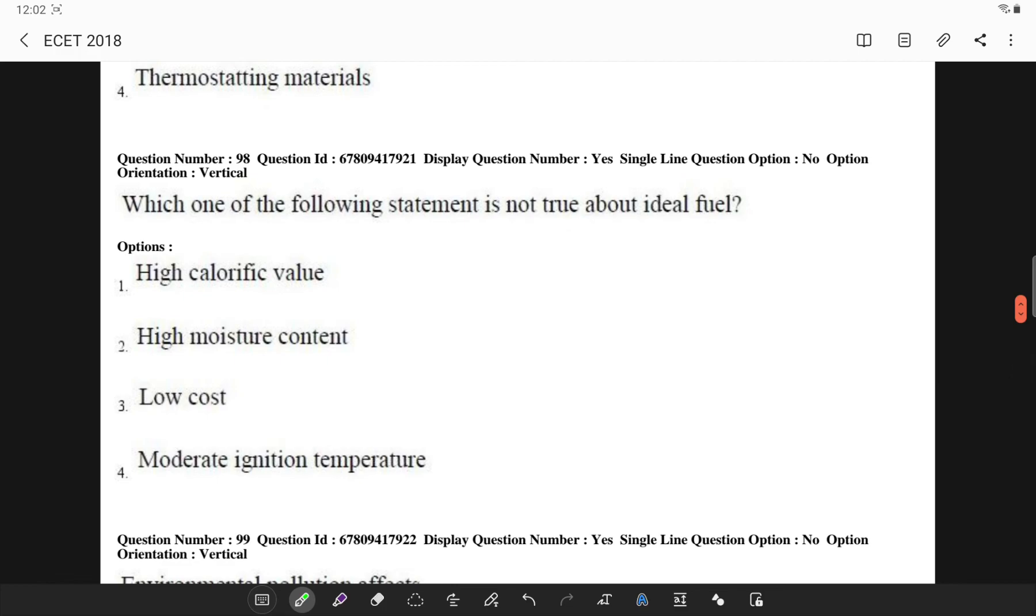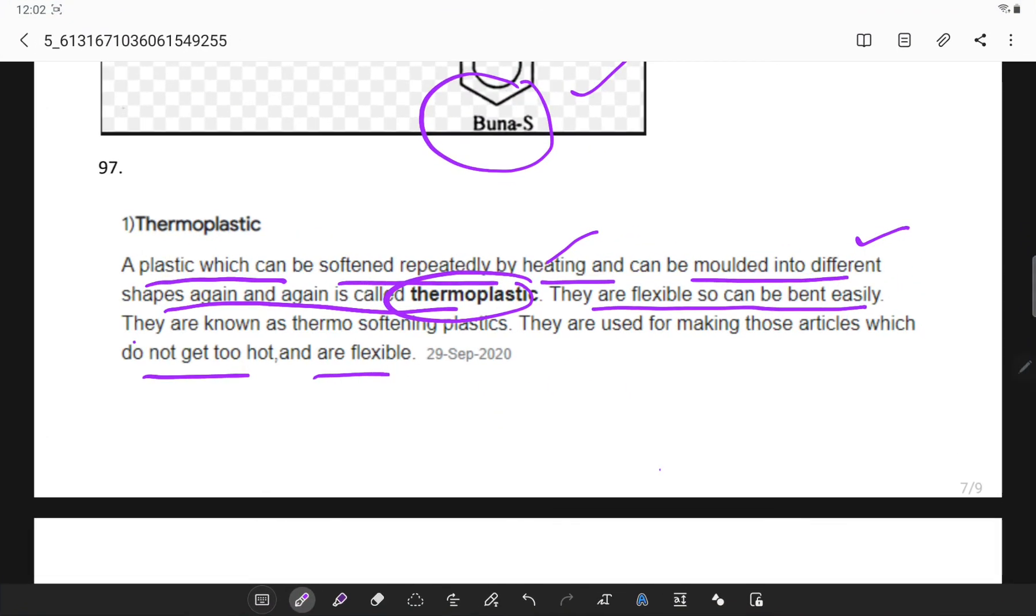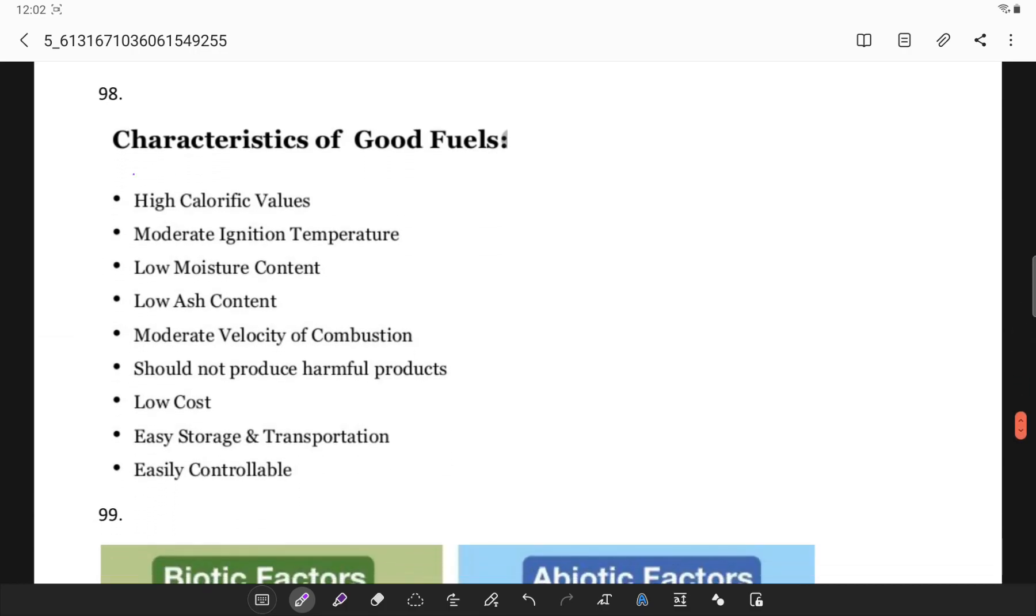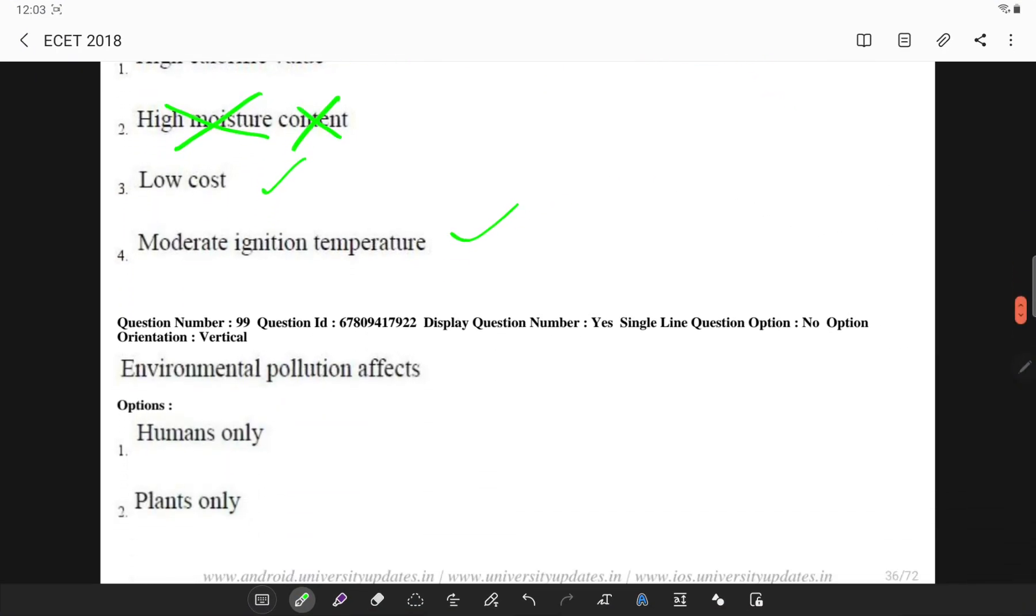Which one of the following statement is not true about an ideal fuel? So we have to know about the ideal fuel. If you observe, it must not have high moisture content, it must be having high calorific value, low cost, moderate ignition but it must have less water content. See the characteristics of a good fuel. It must have high calorific value and low moisture content, this is the wrong bit which is asked. It must have moderate ignition temperature, low ash content, moderate velocity of combustion and it should not produce harmful products. It must have low cost, easy storage, transportation and it must be easily controllable.